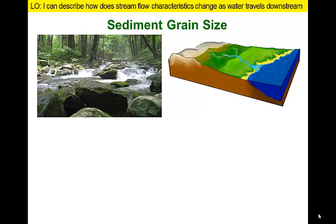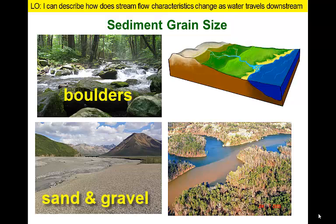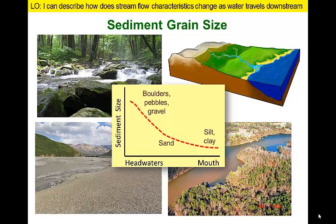If we were to examine the maximum size of sediment carried in the stream, we would see relatively large boulders close to the headwaters, a mix of sand and gravel farther downstream, and silt and clay producing muddy waters in the low-gradient section. A graph of sediment size versus distance would show a decrease in sediment size from headwaters to mouth, though much of the central section will have a mix including clay, sand, and gravel.